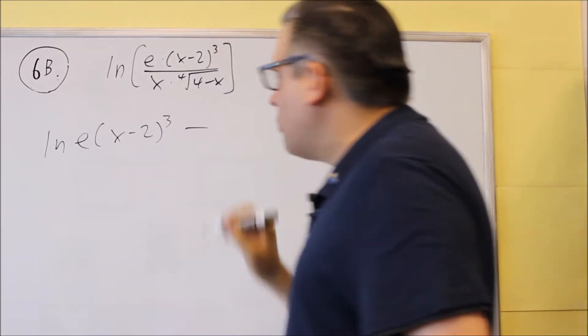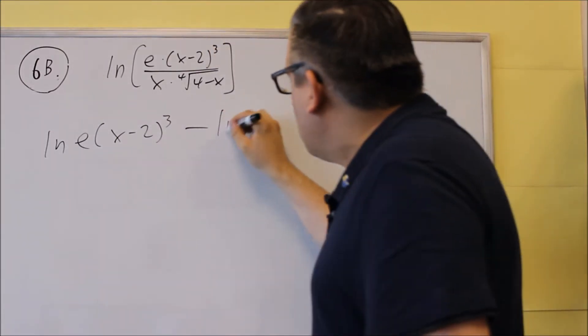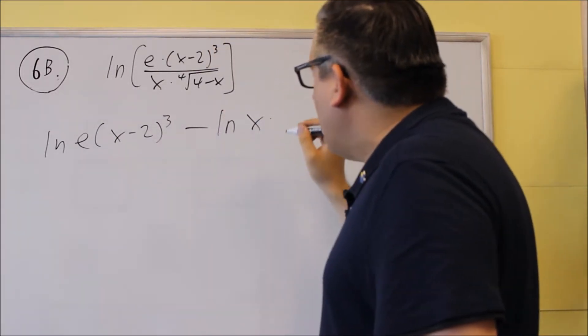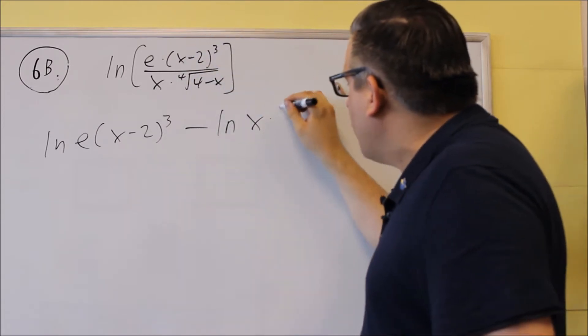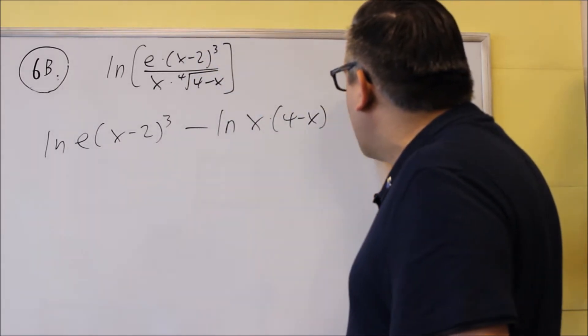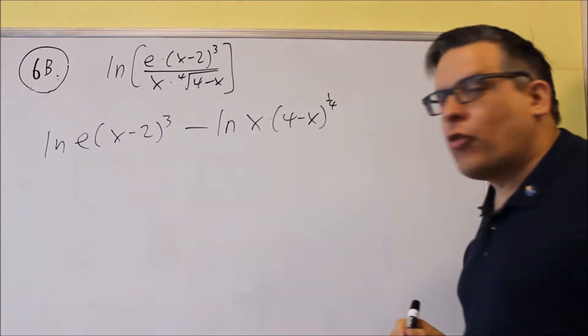So here is the top one, we'll put a minus, we'll put natural log x, and then this part here with the fourth root, I'm going to change that to 4 minus x to the 1 fourth power there.